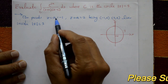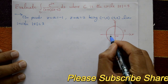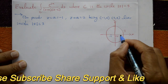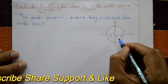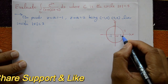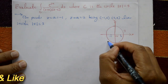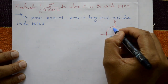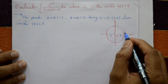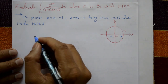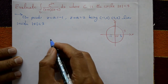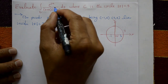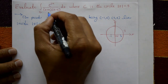So z = -1 and z = 2 are both inside the circle of radius 3. Now, using Cauchy's integral formula, we first resolve 1 over (z+1)(z-2) into partial fractions.